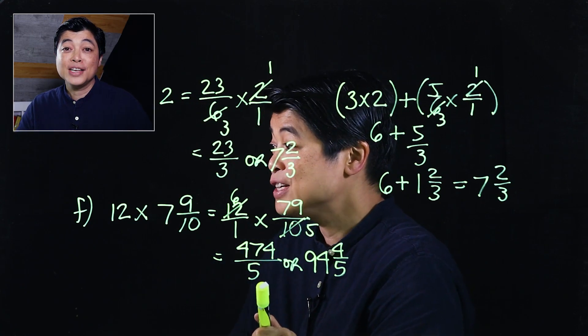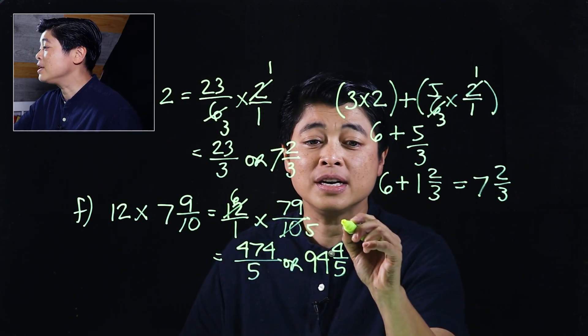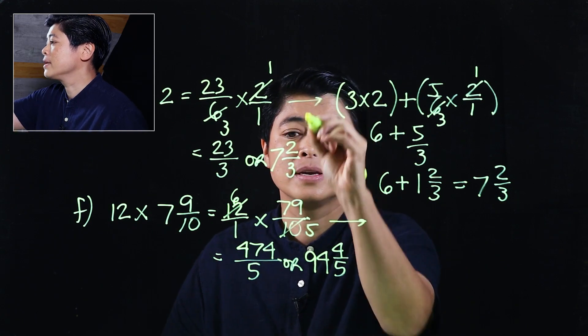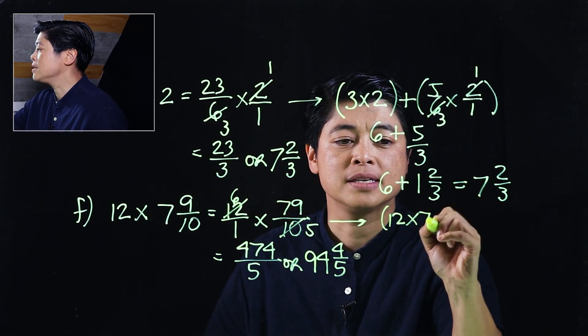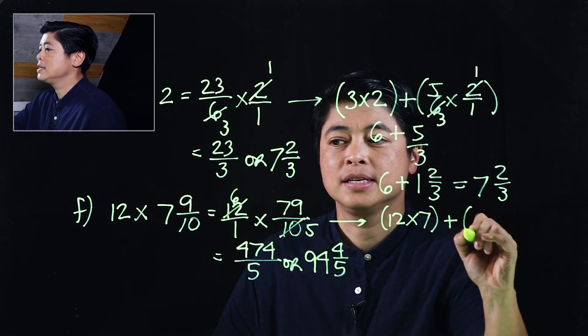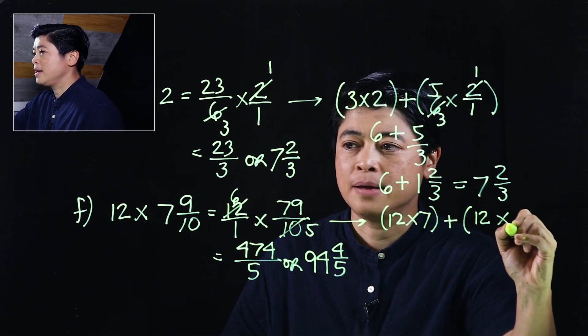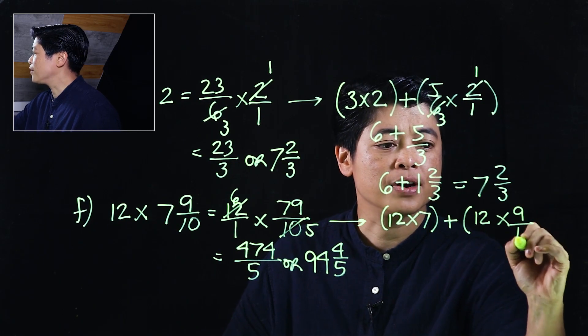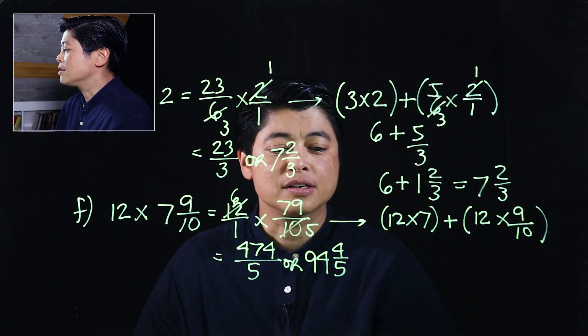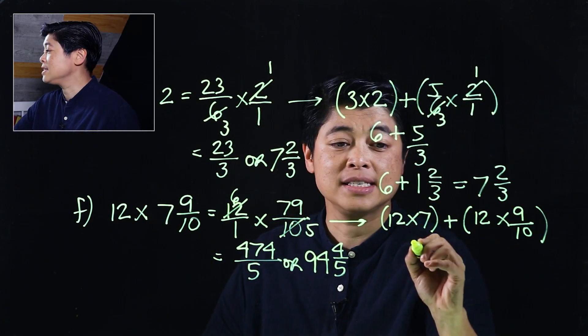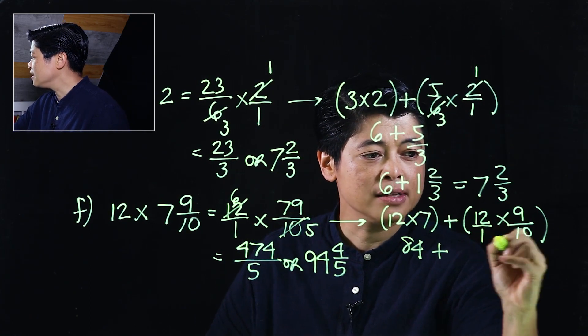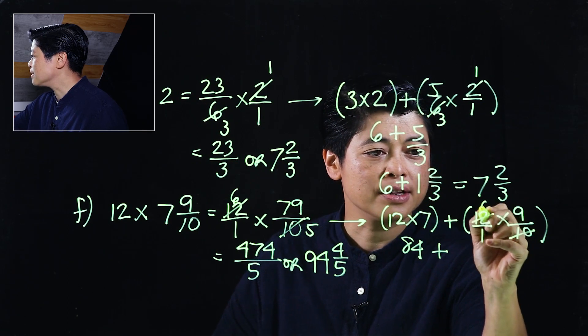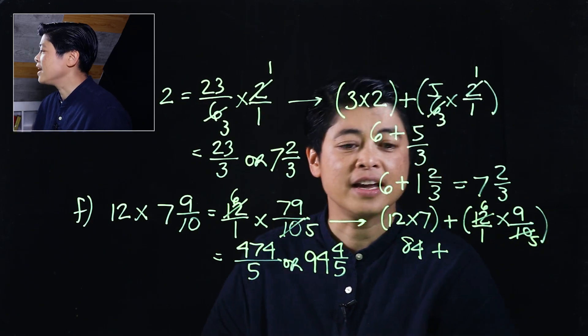Clearly this is stressful so that's why if we look at the alternative. The alternative would have been 12 times 7 plus 12 times 9 over 10. So 12 times 7 is 84 plus we'll make that over 1 so that we can cancel, so that's 6 and that's 5.